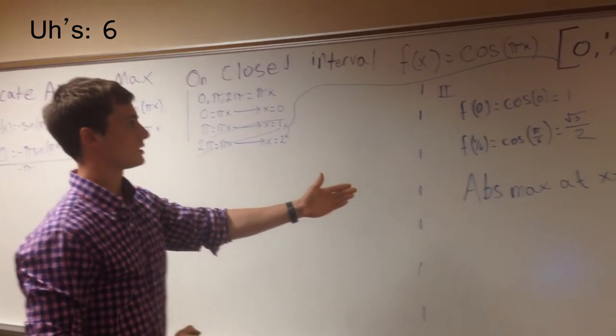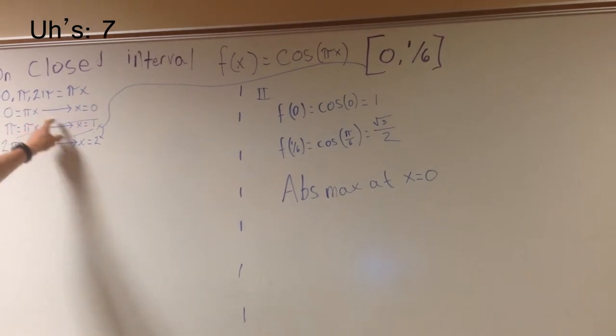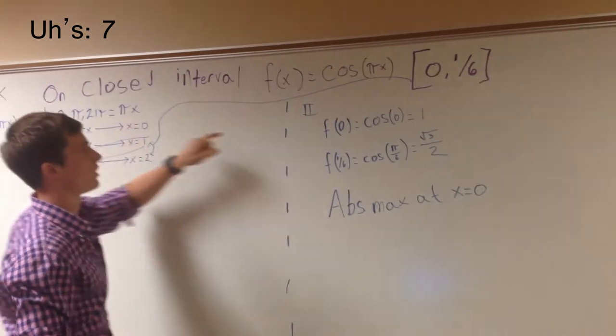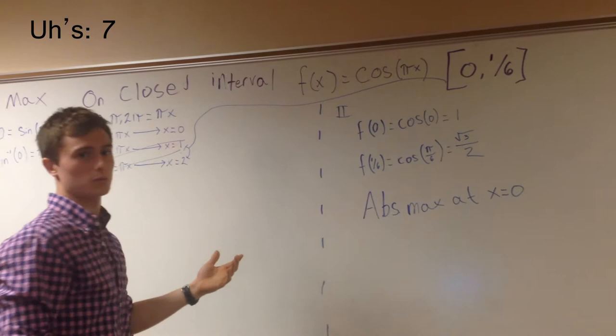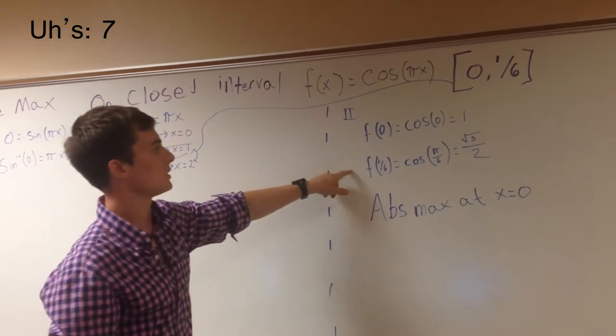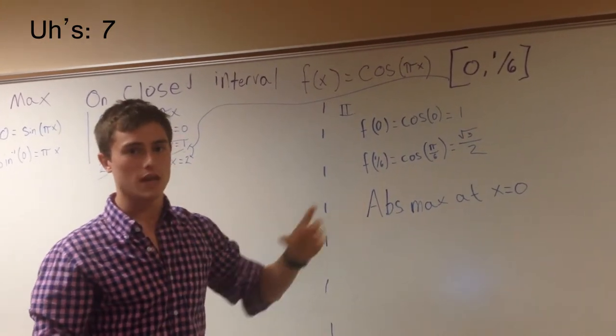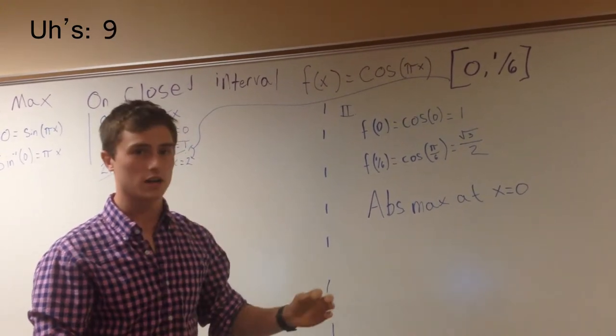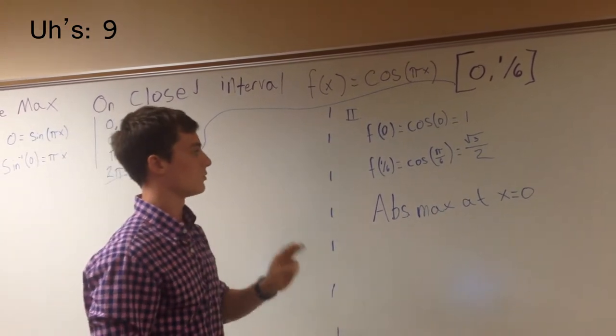So, the second step of this is to set what critical value we do have, which is zero. The reason we can use zero is it says on the closed interval, so zero is an actual point. If it said on the open interval, which it probably wouldn't, we couldn't use zero, but we can. So, we set zero and then one-sixth, because according to EVT, you can have maxes and mins on a closed interval at the points that are defined by the interval.